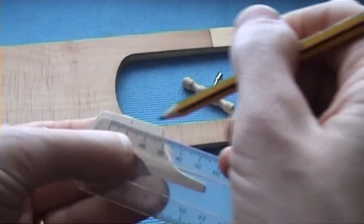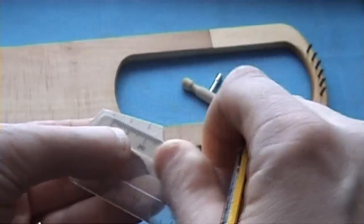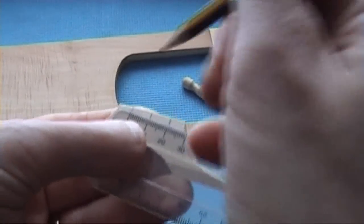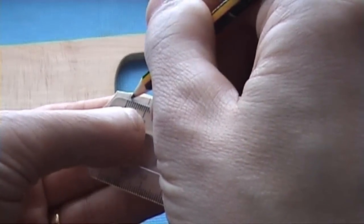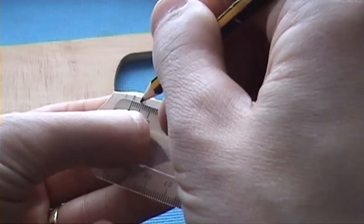We mark a center point and then we mark ten millimeters either side of the center point. Then what we need to do is to mark four millimeters and make a mark, again four millimeters and make a mark.